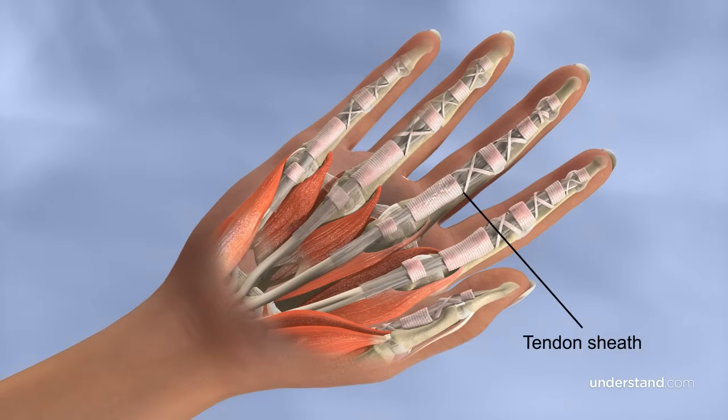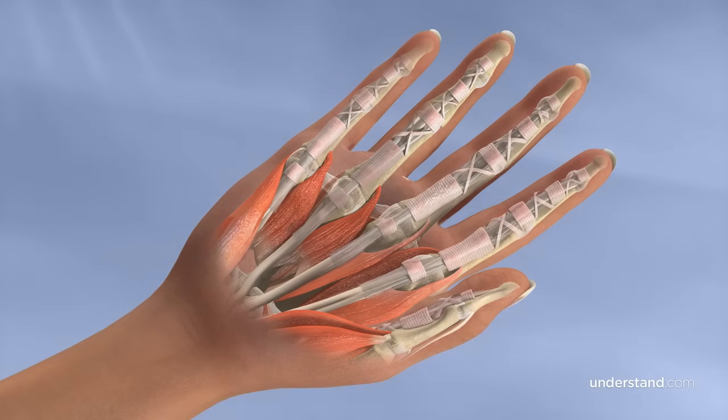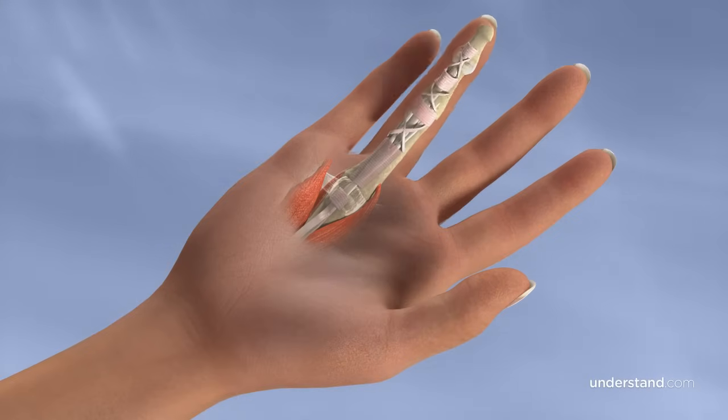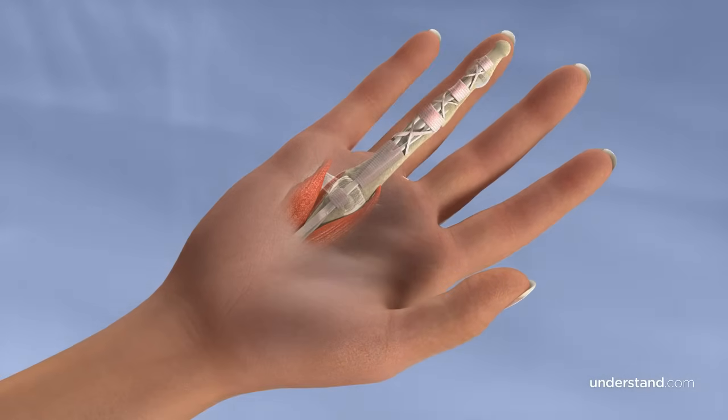These tendons are enclosed in sheaths lubricated with synovial fluid. This allows the tendons to freely glide while holding them next to the bones of the finger. Normally, the tendons glide smoothly through the sheaths as the fingers flex and extend.